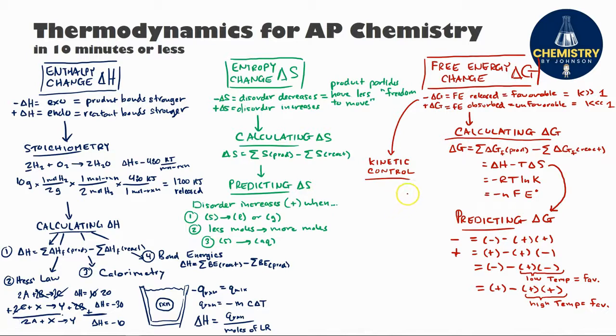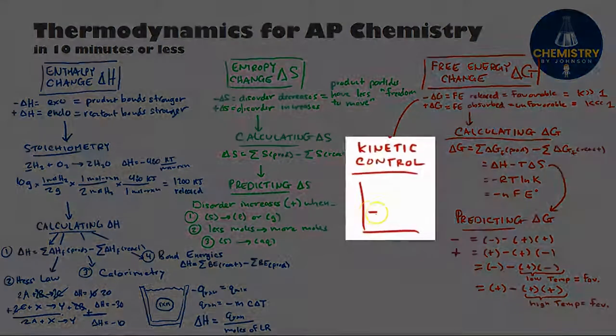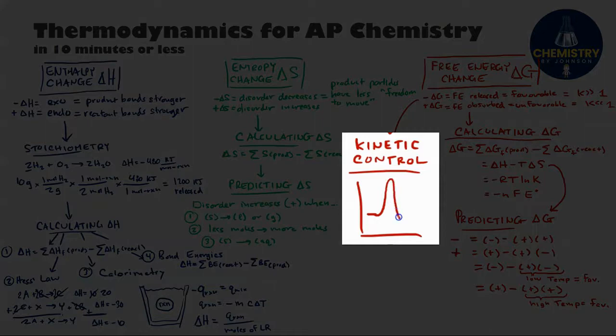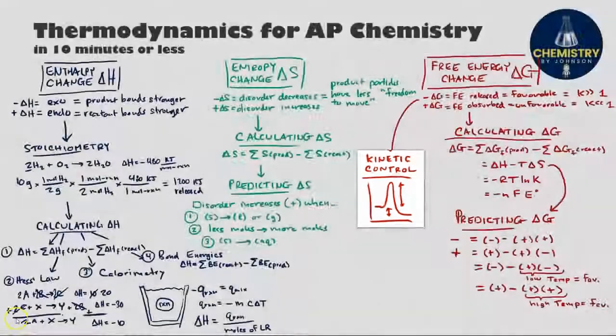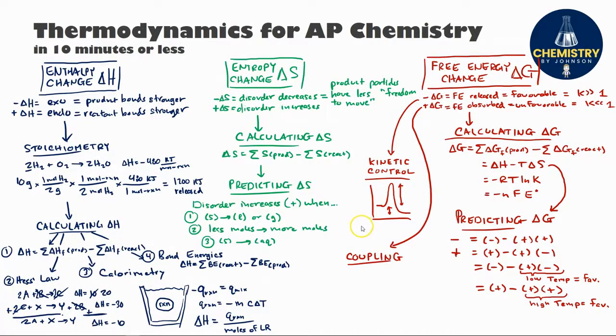There's two other things you may come across. One of them is why a negative delta G reaction will not happen in real life. This is called kinetic control, where the activation energy for a reaction might be so high that even though the delta G is negative, you can see the products have less energy than the reactants here, so free energy will be released. Even though this reaction should be favorable, it takes such a large amount of energy to get it started that it never actually gets started or it is so slow that we can never really observe the reaction taking place.